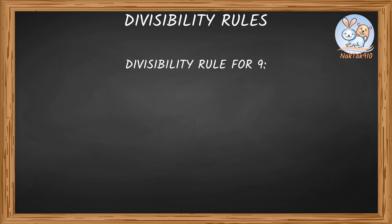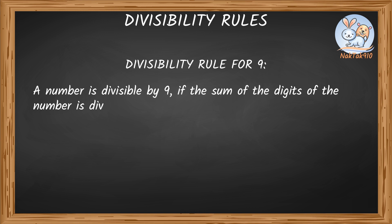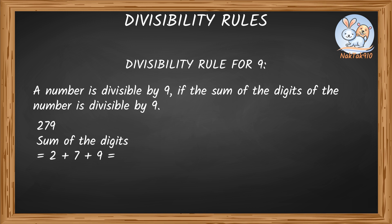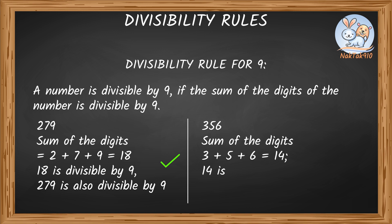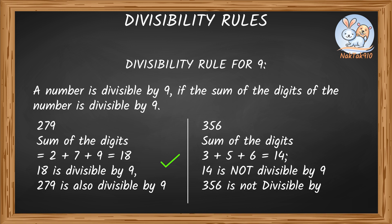Divisibility rule for 9: a number is divisible by 9 if the sum of its digits is divisible by 9. For 279: 2 plus 7 plus 9 equals 18, and 18 is divisible by 9, so 279 is also divisible by 9. For 356: 3 plus 5 plus 6 equals 14, and 14 is not divisible by 9, so 356 is not divisible by 9.